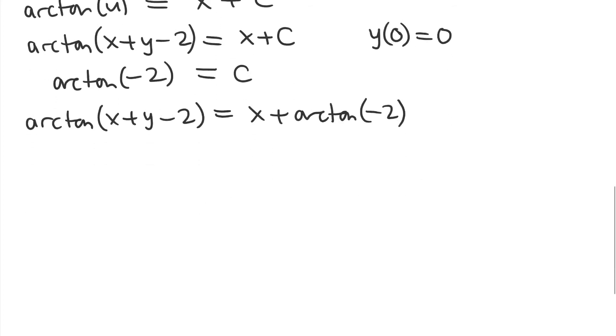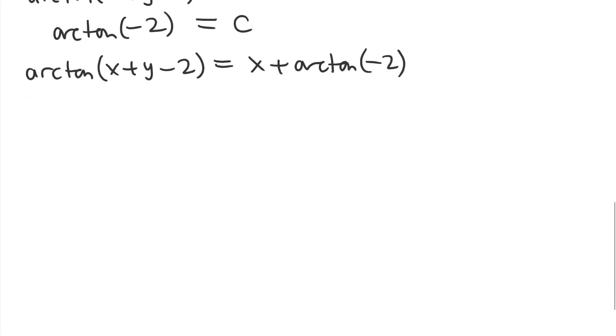Now this is an implicit solution because I haven't directly solved for y. But in this case, we can actually solve for y by taking the tangent of both sides. On the left-hand side, it will cancel out the arctangent, and so I get the inside part: x + y - 2.